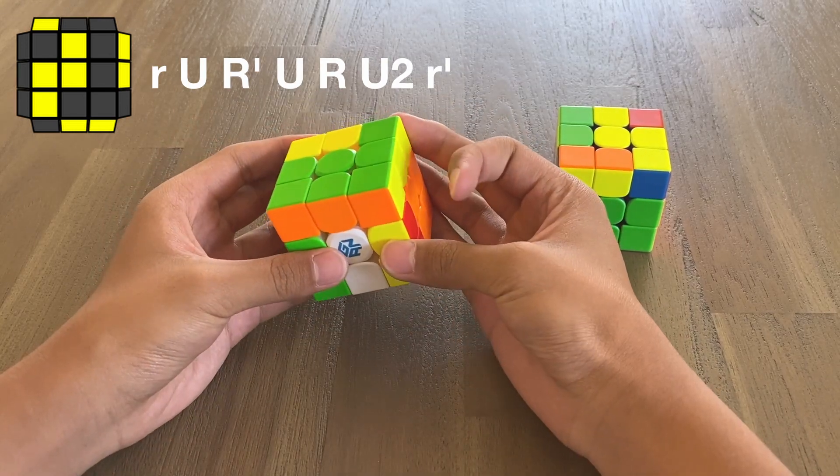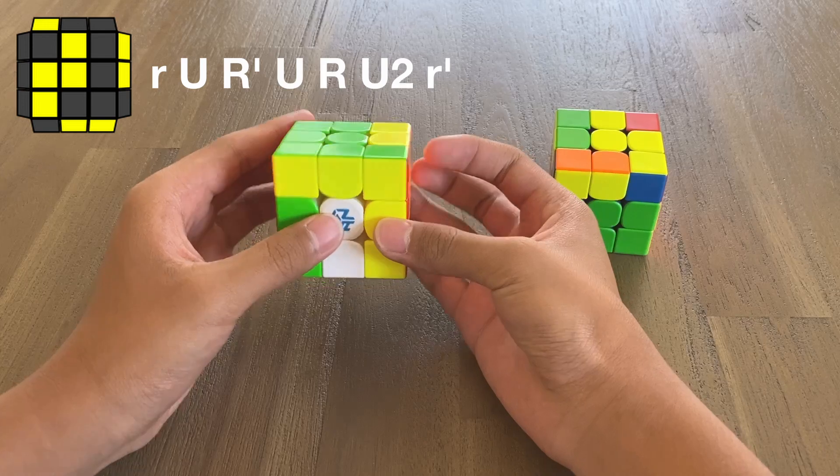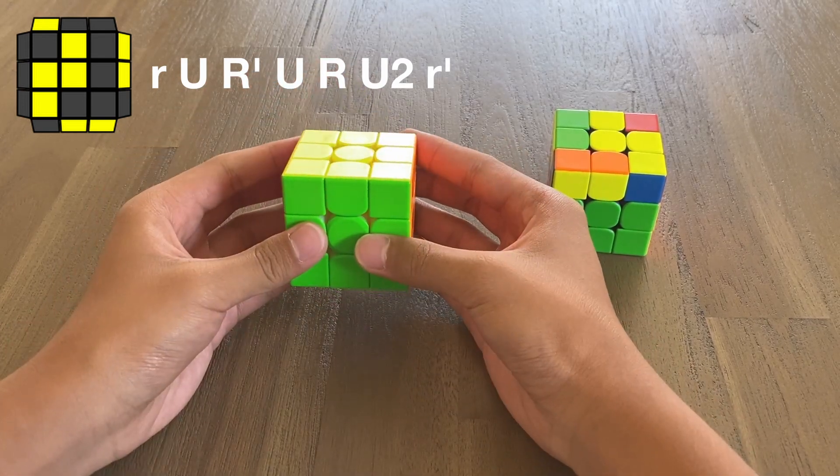Make sure to do this U with your middle finger, double flick, and back down.